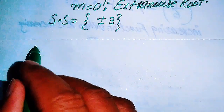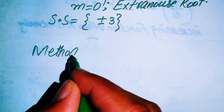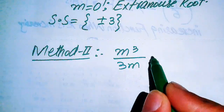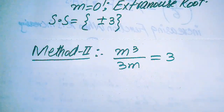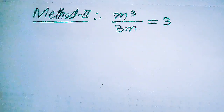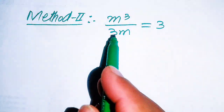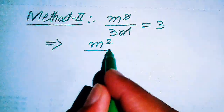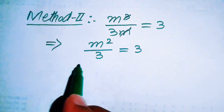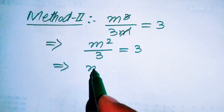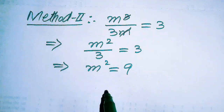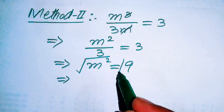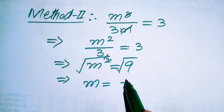Now we solve this problem using the second method. The given equation is m cubed divided by 3m equals to 3. In this method, we quickly get the roots: m cubed divided by 3m — the m in the numerator and the m in the denominator cancel each other, giving m squared divided by 3 equals to 3. Moving the 3 to the right hand side: m squared equals to 3 times 3, which is 9.